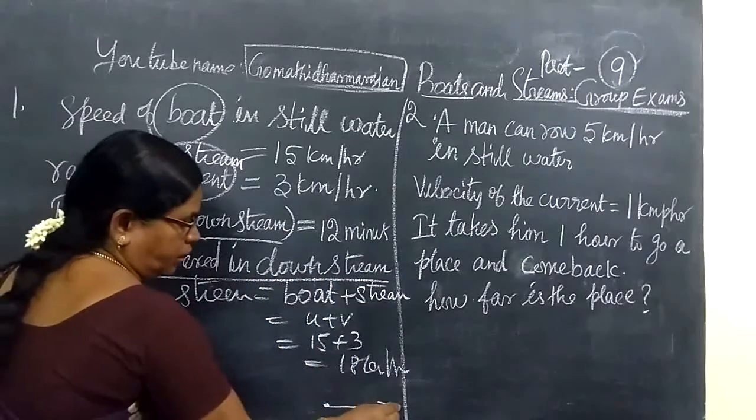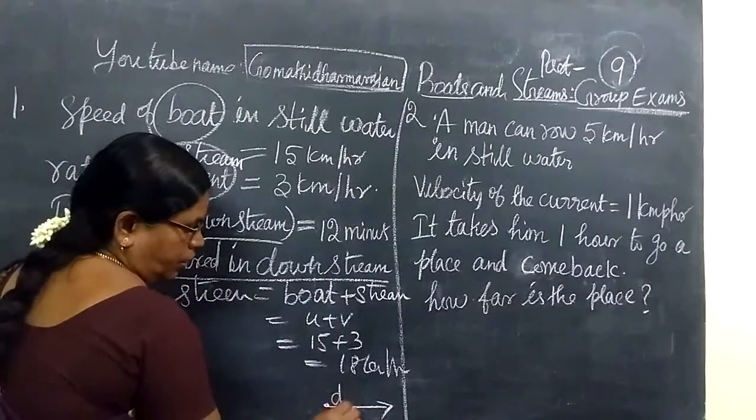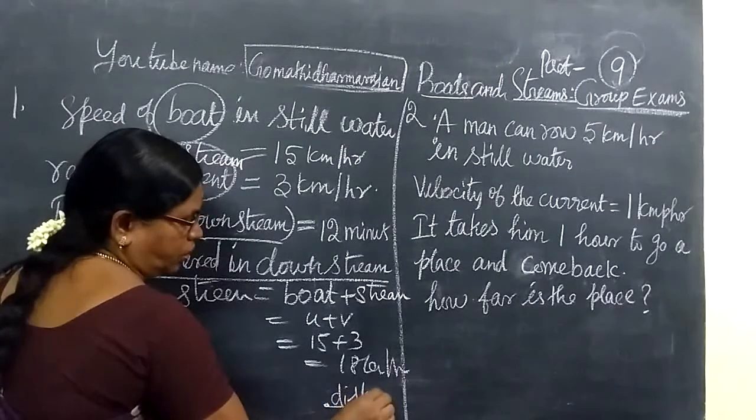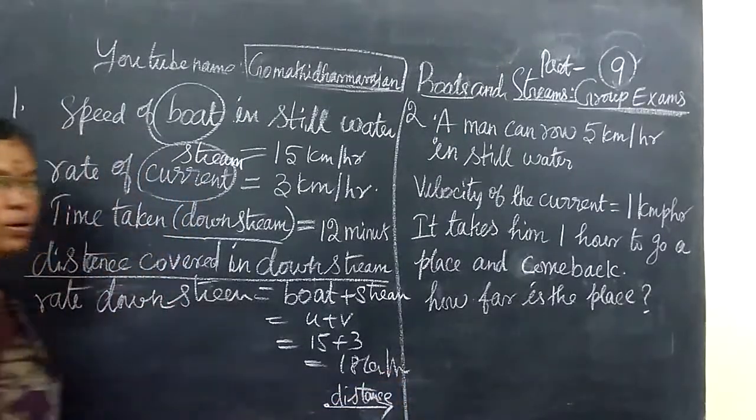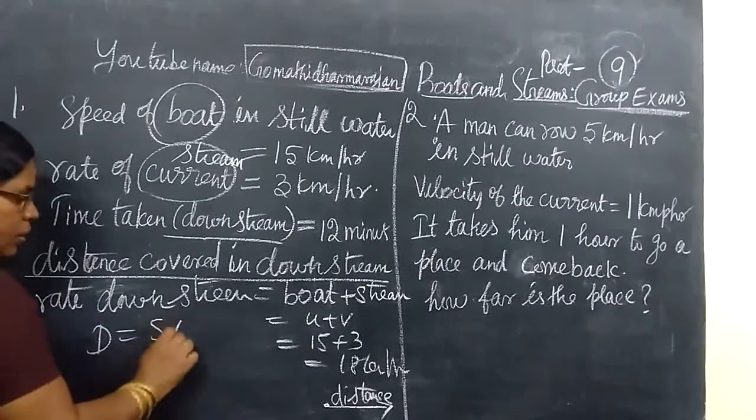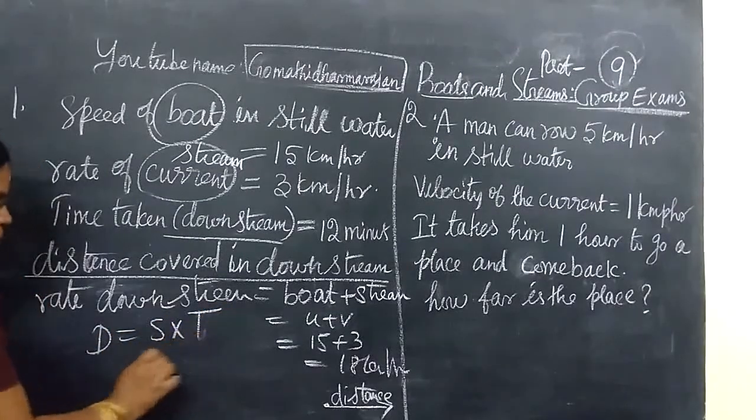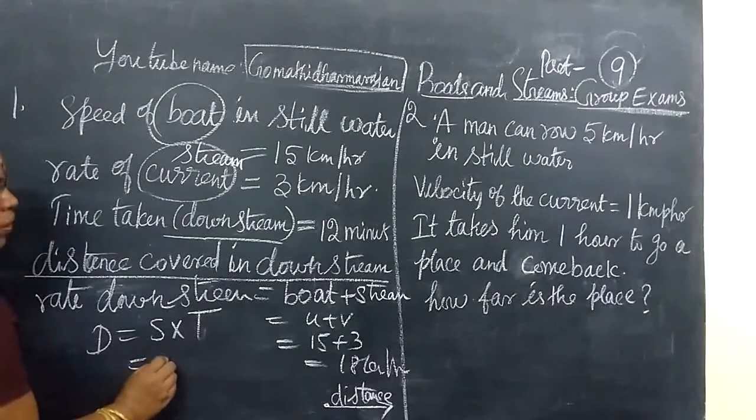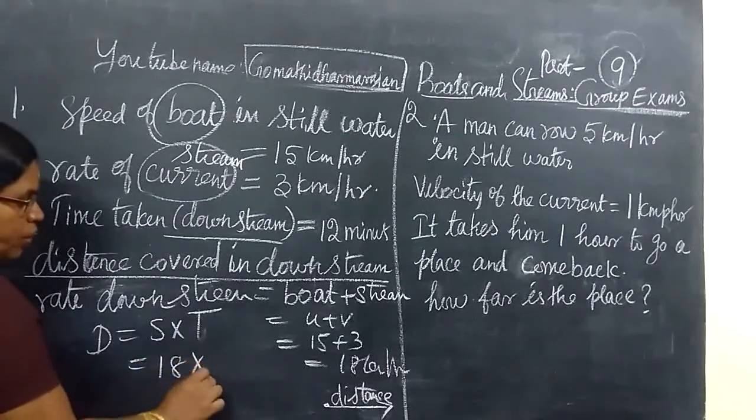You have to find the distance covered in the downstream. The starting place is here. It is very important in the distance downstream position. We know the formula distance equals speed into time. So speed is 18 km per hour.